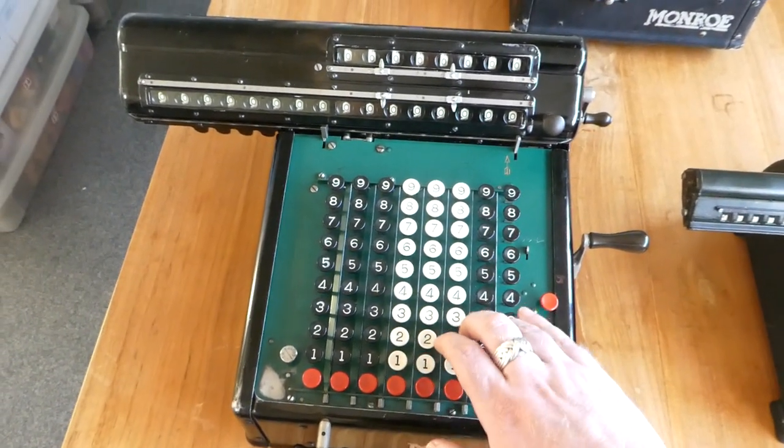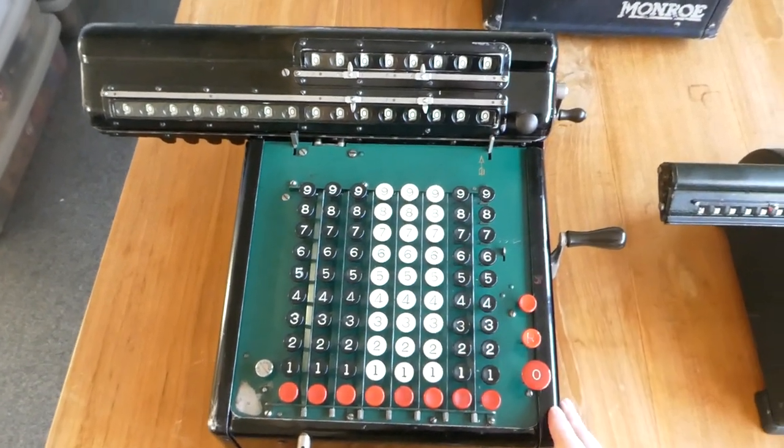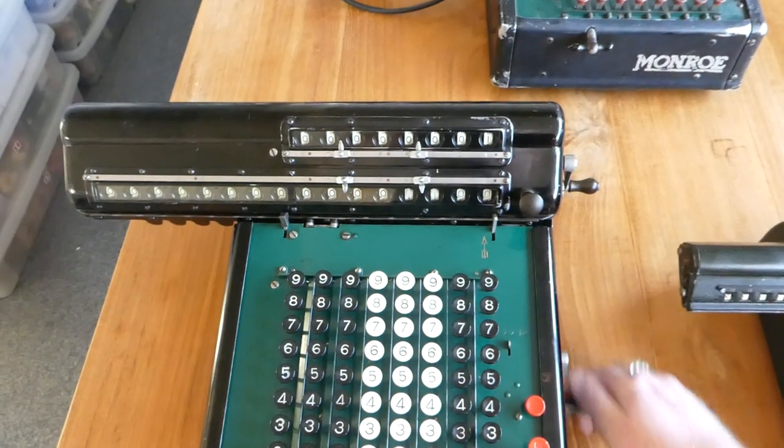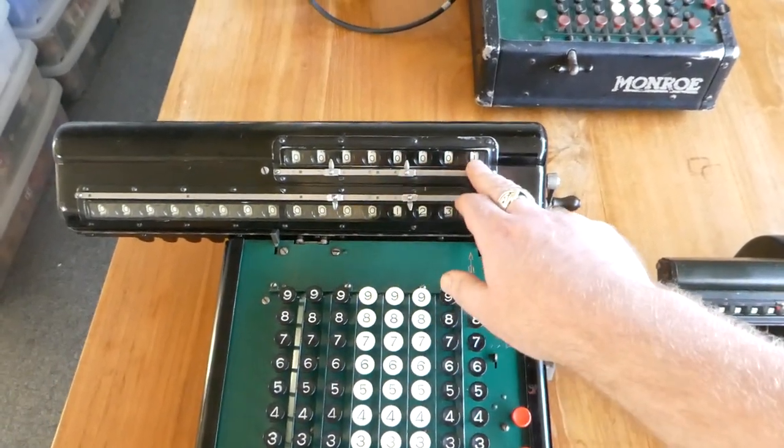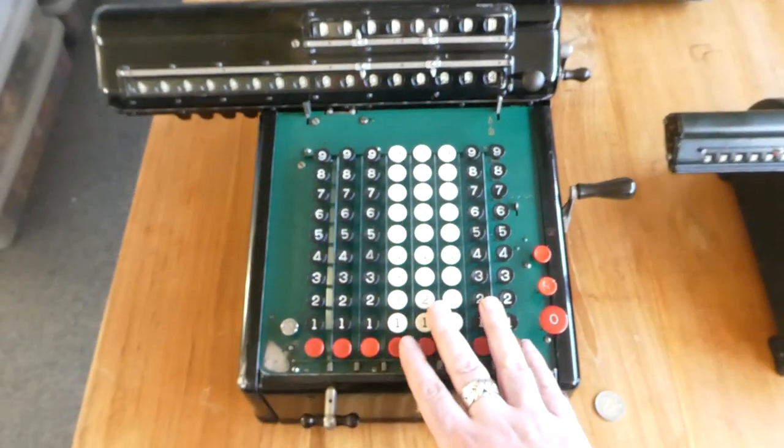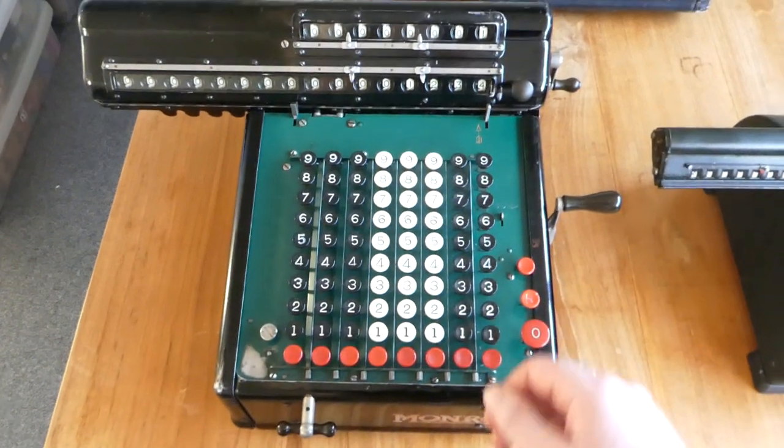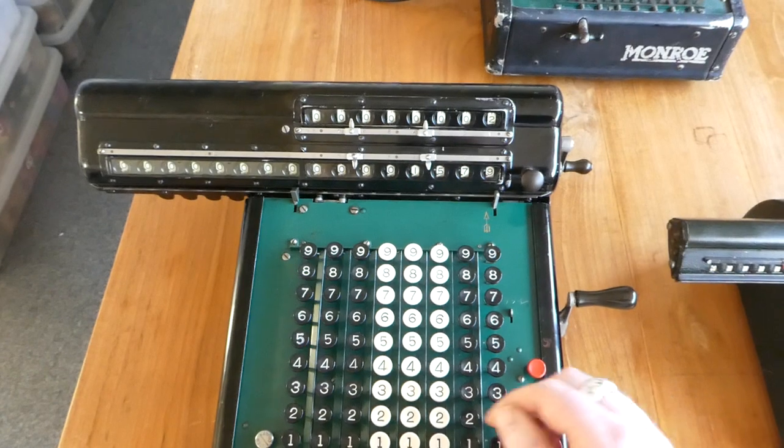You can enter a number on the keyboard, one digit in each column, and if you turn the crank it gets added to the register, and the counter is incremented by one. The keyboard is cleared so you can immediately enter another number to add, and so on.